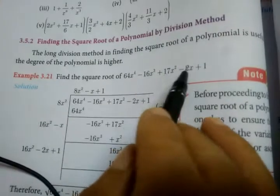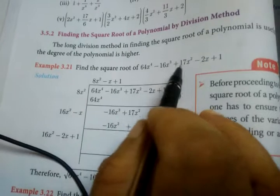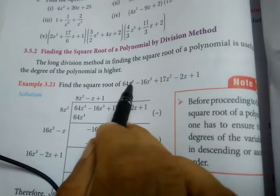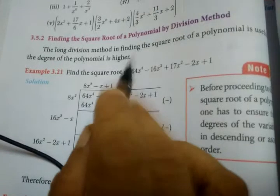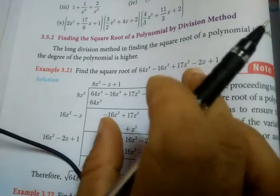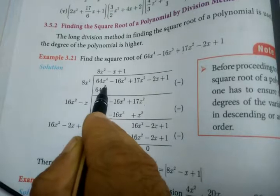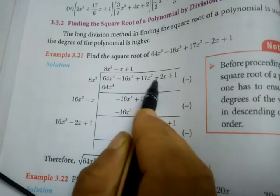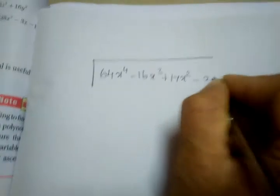Now let's look at the standard order. We need to write it in standard form. In standard form, the powers go: power 4, 3, 2, 1, and then the constant term. This is descending order. So we will write in descending order: 64x power 4 minus 16x cube plus 17x square minus 2x plus 1.